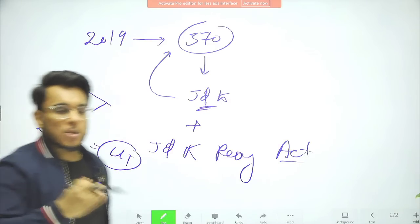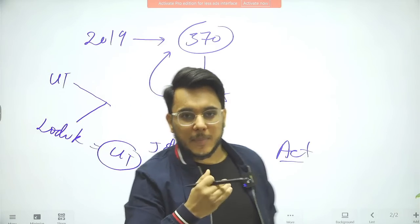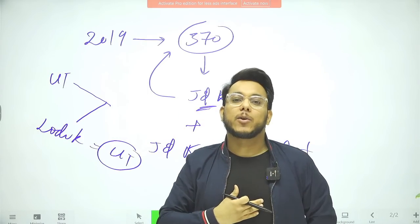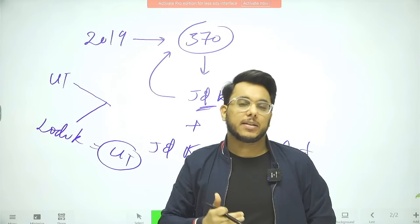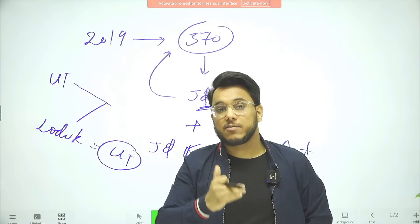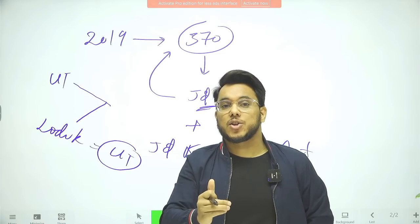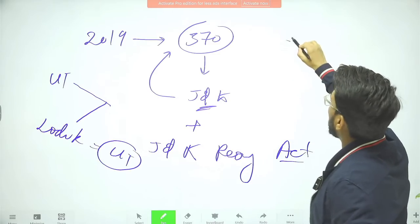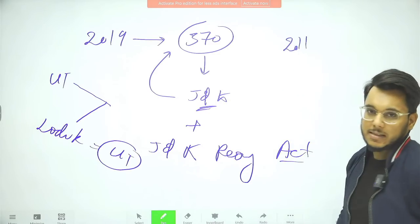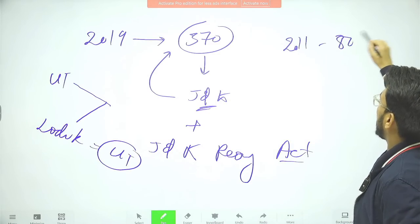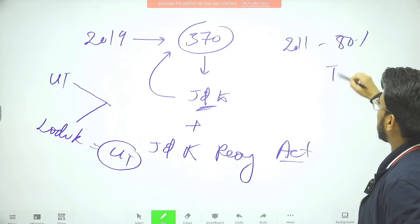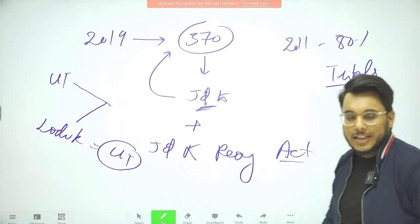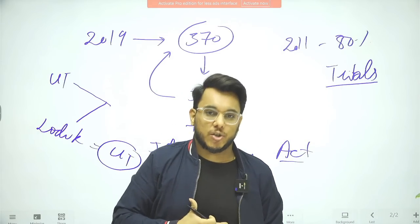Since 2019, people living in Ladakh — mainly tribals and civil society groups — have been petitioning for special safeguards and special protection. According to the 2011 census, 80% of the population in the Ladakh region are tribals, and they want special protection. So they are demanding that the Ladakh region be included under the 6th Schedule of the Indian Constitution.